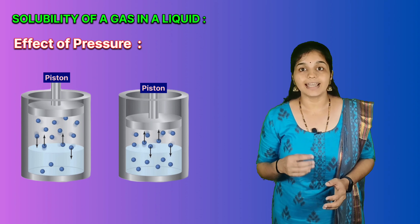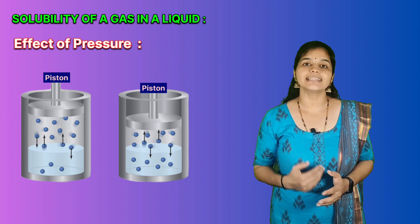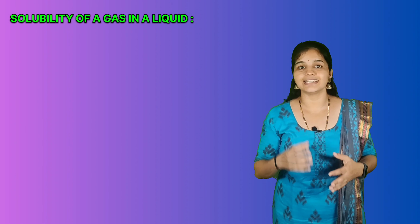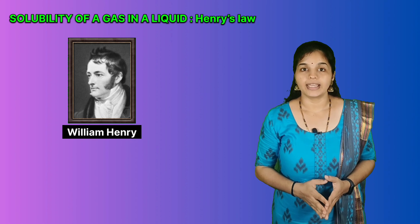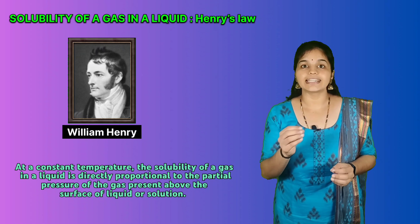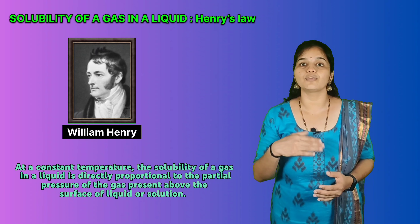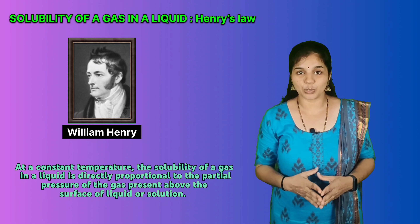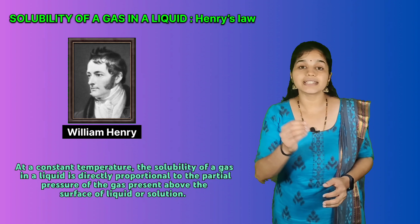This results in an increase in the pressure of gas above the solution and thus solubility of the gas increases. The first quantitative relation between pressure and solubility of a gas in a solvent was given by Henry, known as Henry's Law. This law states that at a constant temperature, the solubility of a gas in a liquid is directly proportional to the partial pressure of the gas present above the surface of the liquid or solution. Dalton independently also stated that the solubility of a gas in a liquid solution is a function of the partial pressure of the gas.